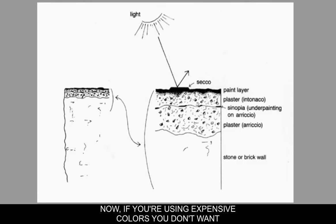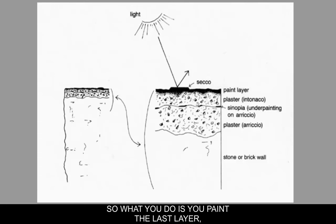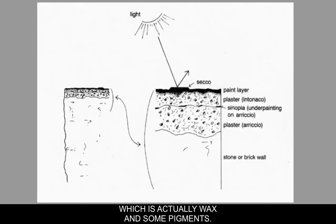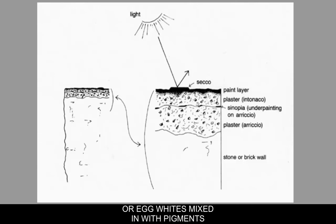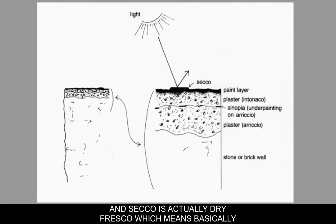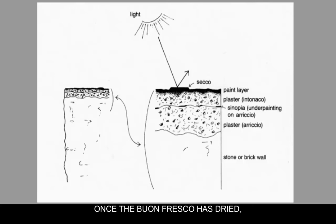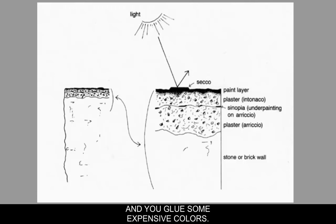If you're using expensive colors, you don't want them soaking into the wall, so you paint a last layer either in encaustic — wax mixed with pigments — or in tempera paint, which is egg yolk or egg whites mixed with pigments that glue the particles to the wall. That's called secco, or dry fresco, meaning once the buon fresco has dried, you go back in with a dry layer and apply some expensive colors.